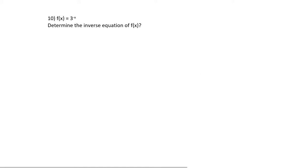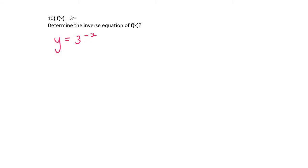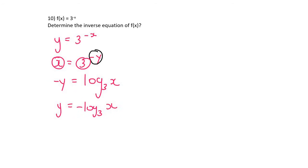To determine the inverse equation, switch x and y around. Write y = 3^(−x), then switch to get x = 3^(−y). Use logs: −y = log₃(x). Then get y alone by taking the negative over to the other side. That's our answer.